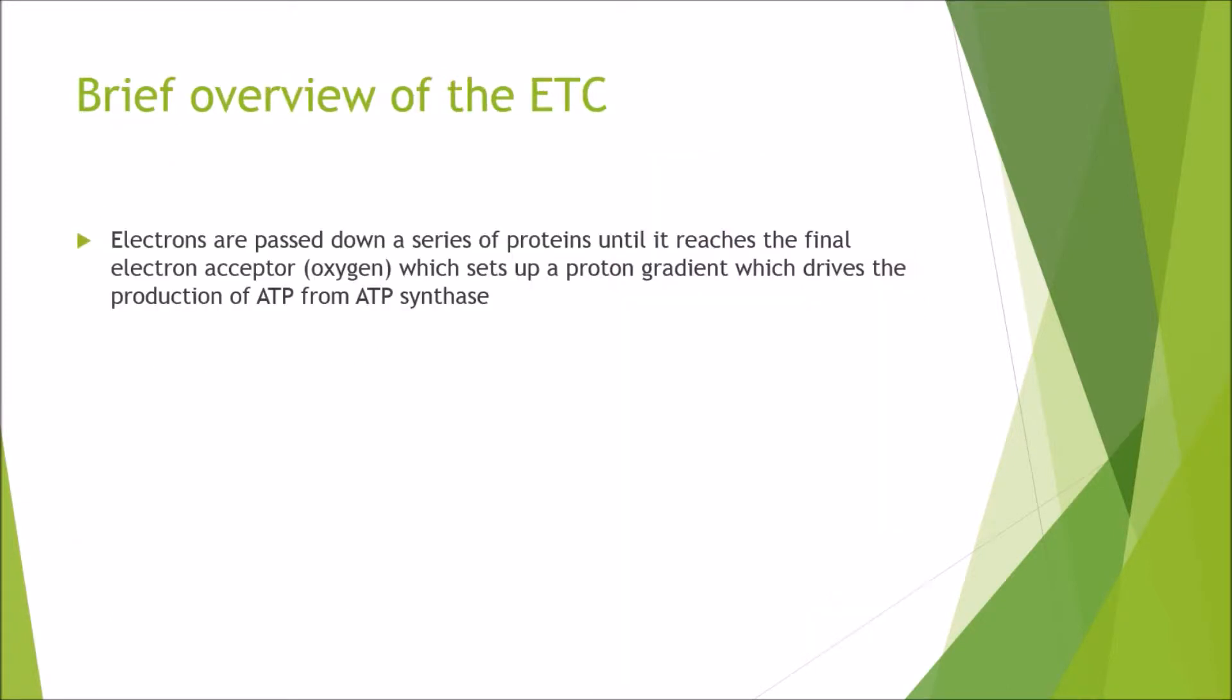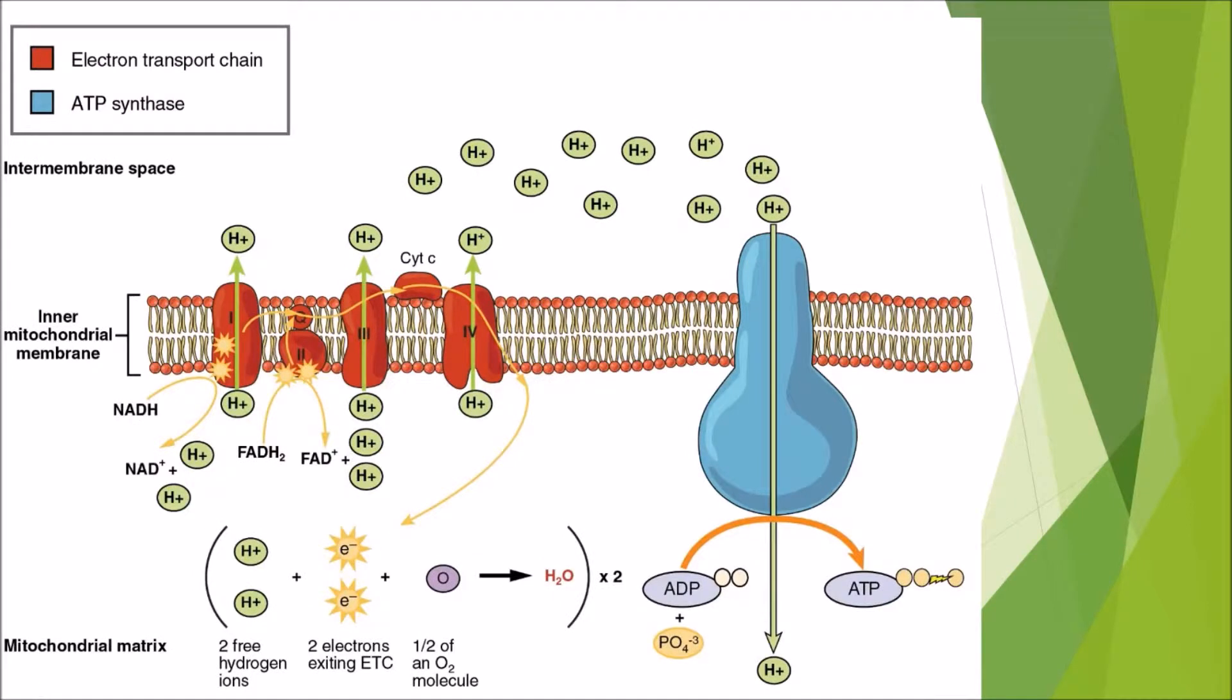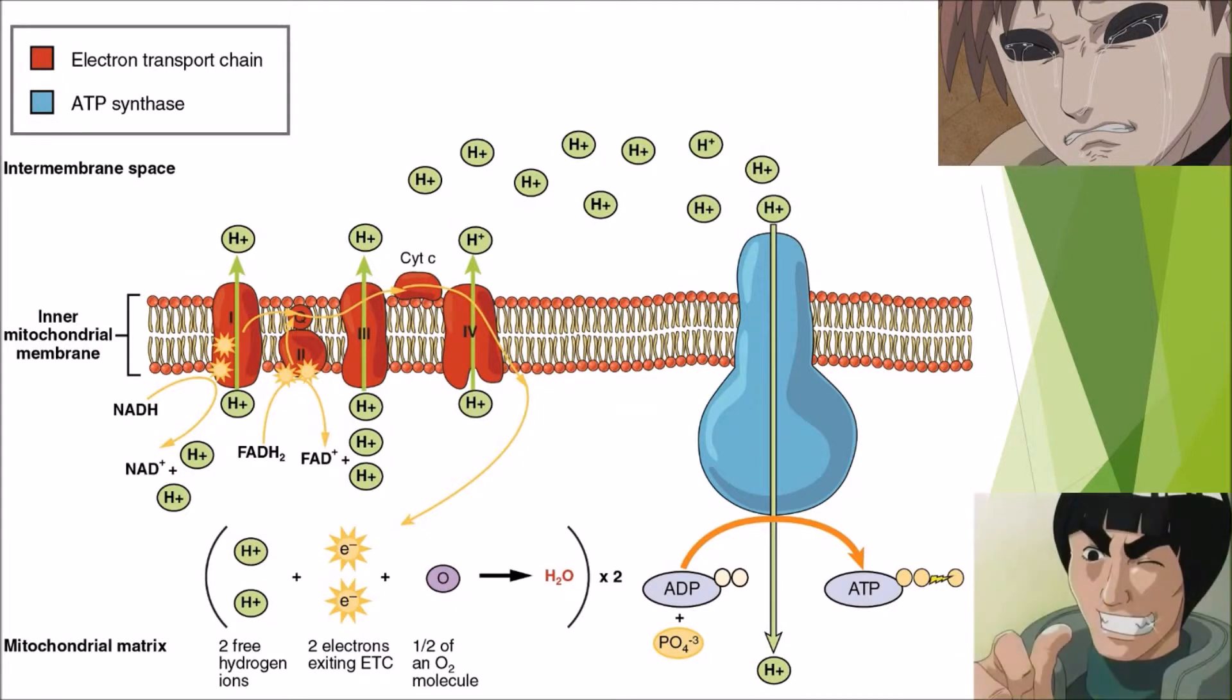Let's have a quick brief overview of the electron transport chain. Electrons are passed down a series of proteins until it reaches the final electron acceptor which is oxygen, which allows it to set a proton gradient which drives the production of ATP from ATP synthase. This here is a shorter version of what the electron transport chain actually looks like. As we can see there's all sorts of lines going about, we've got irons going in and out of the place, and it probably makes you want to cry like poor little Gaara up there in the corner. But actually we're going to break it down bit by bit just so you know that it's not actually as bad as what it looks. So let's turn that frown upside down and let's get on with it.